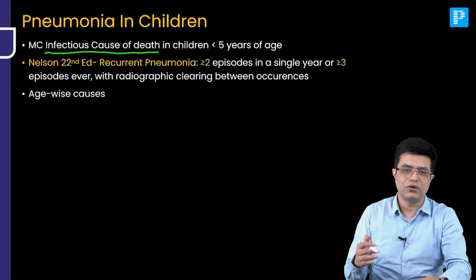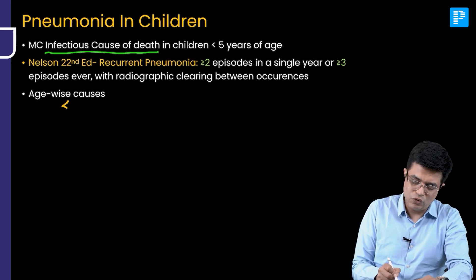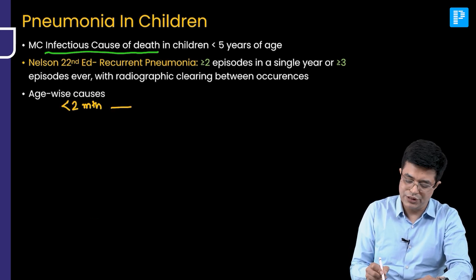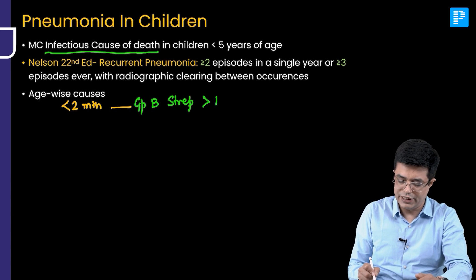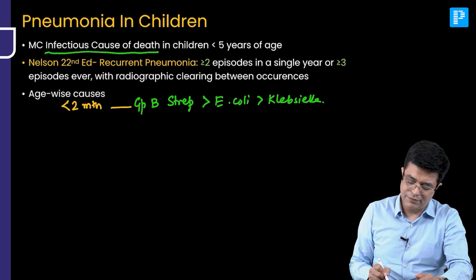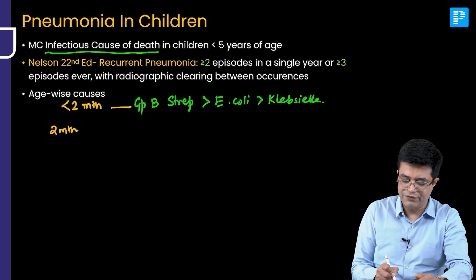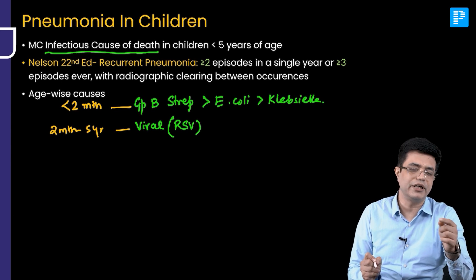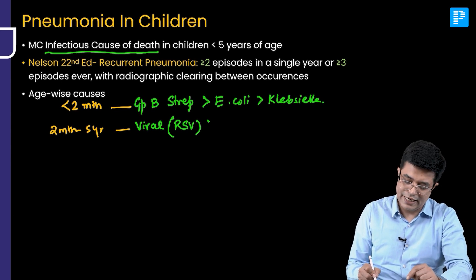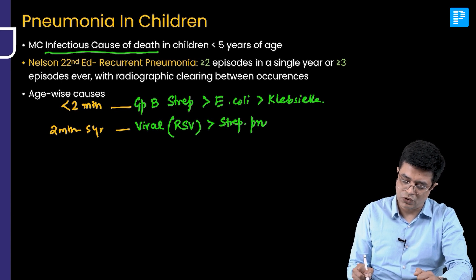Coming to the causes of pneumonia, the causes can be divided age-wise. For less than two months of age, pneumonia is a part of neonatal sepsis, so the same pathogens are applicable. Most commonly it is caused by Group B Streptococcus, that is Streptococcus pneumoniae, also called pneumococcus. When it comes to age 2 months to 5 years, it is the viral causes which become prominent. The most common viral cause of pneumonia in children is Respiratory Syncytial Virus — it causes not only bronchiolitis but is also a common cause of pneumonia. The second common cause is bacterial, that is Streptococcus pneumoniae, also called pneumococcus.